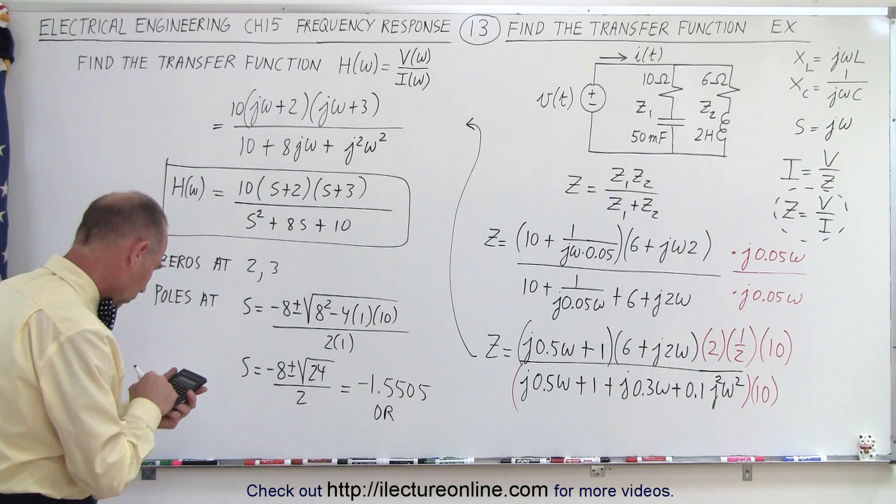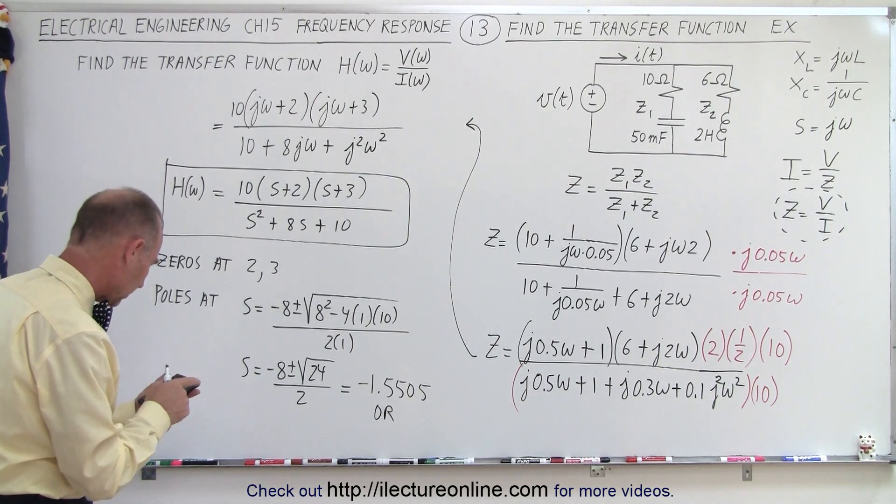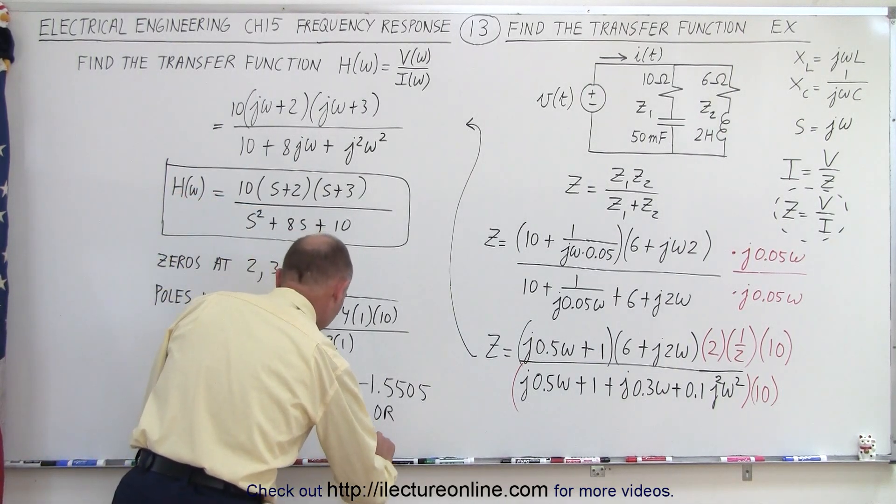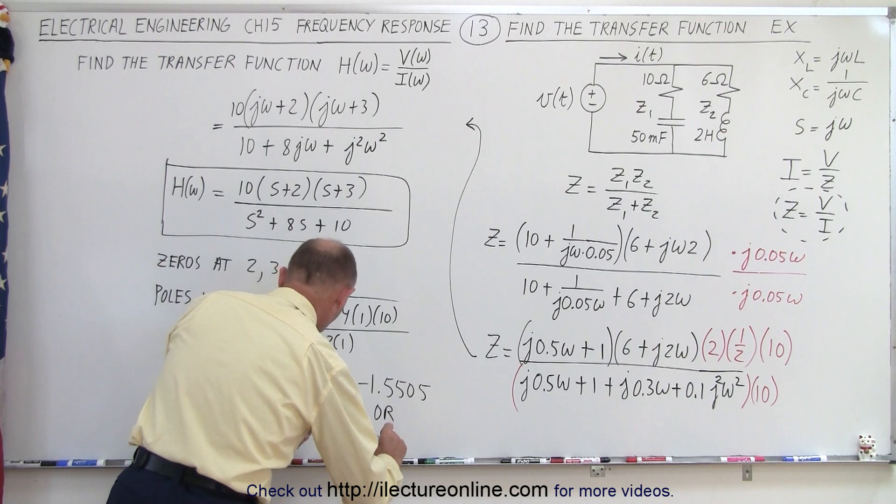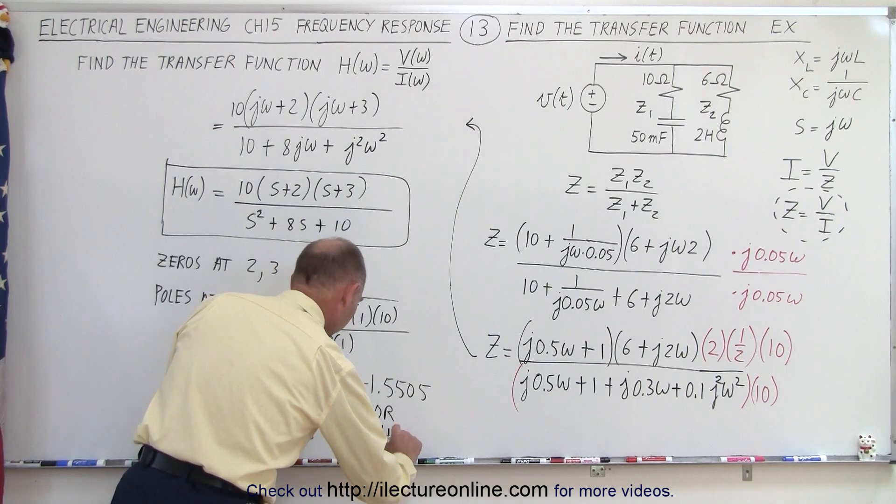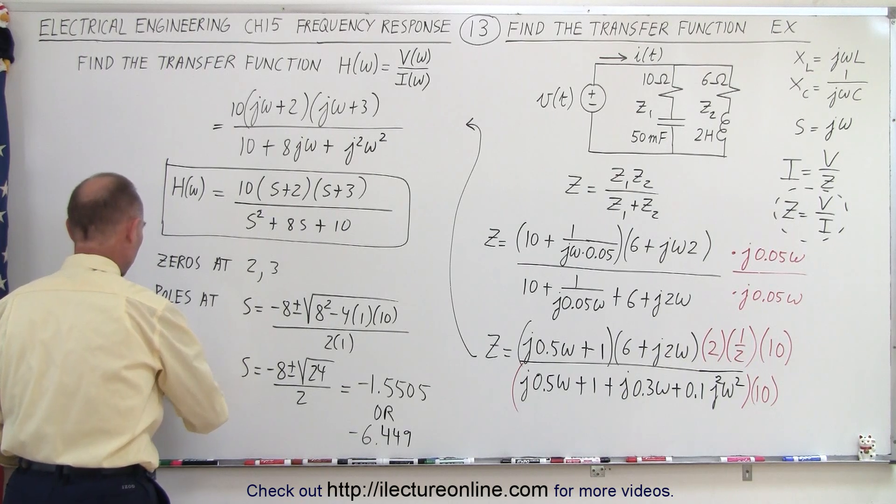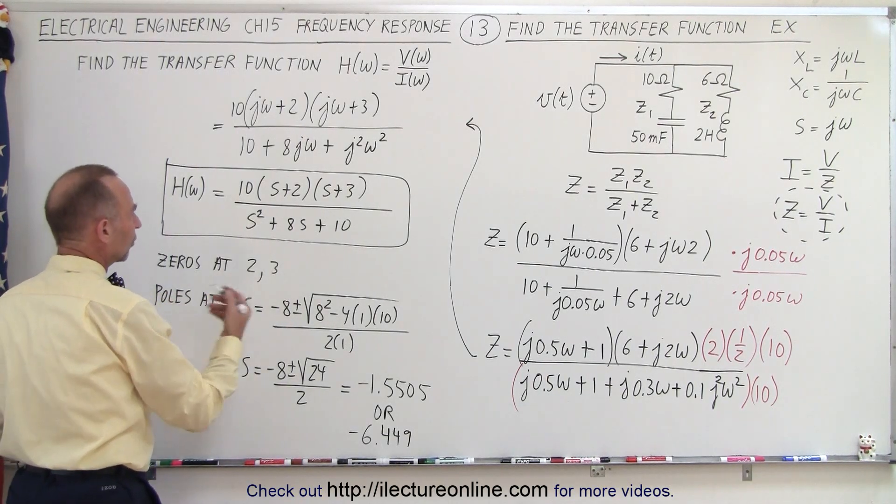That would be 1.505, minus 5.505. Or, if I take 24, take the square root of that, make that minus, minus 8 equals, divided by 2 equals, that would be minus 6.449. So, here I have the two poles and the two zeros.